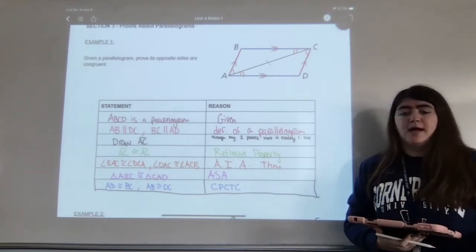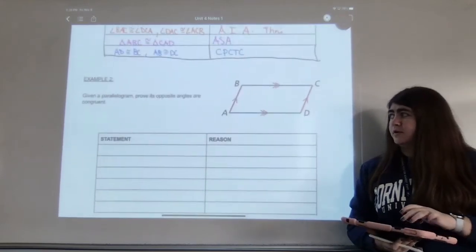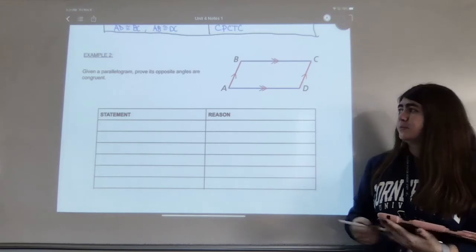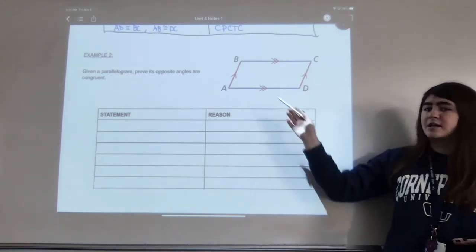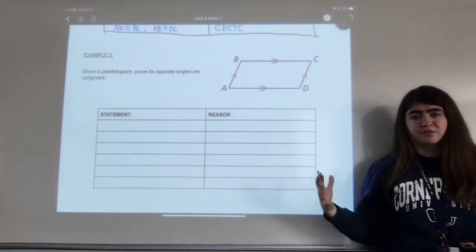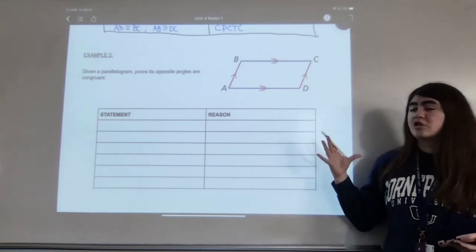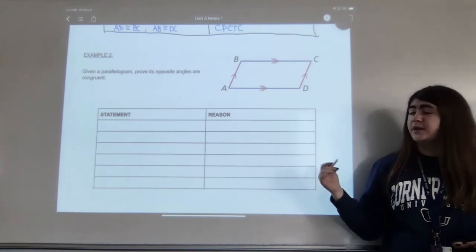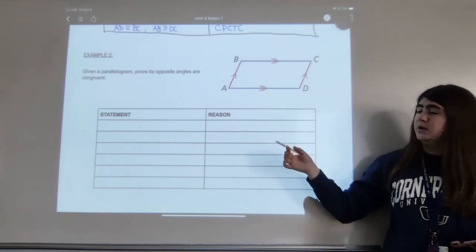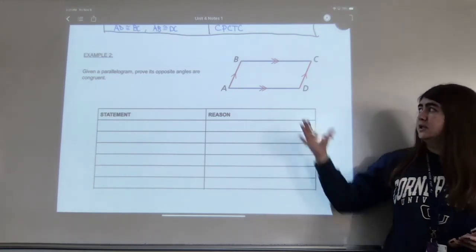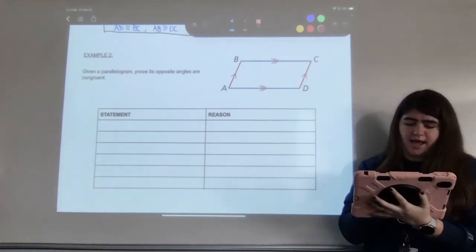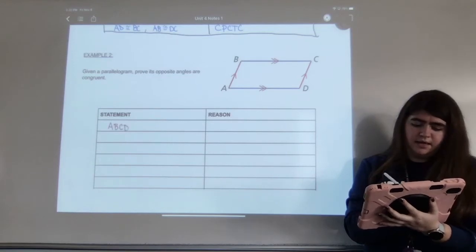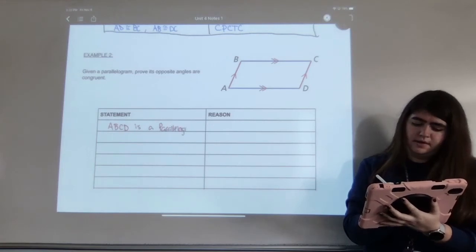We're going to look at example two, where we prove another property of parallelograms. In example two, it says: given a parallelogram, prove that its opposite angles are congruent. Last time we proved opposite sides are congruent; this time we're proving opposite angles are congruent. So we'll start with our given statement: ABCD is a parallelogram, because it is given.